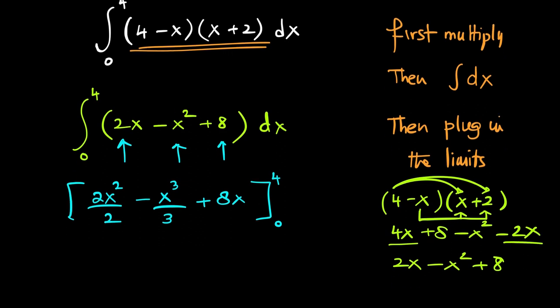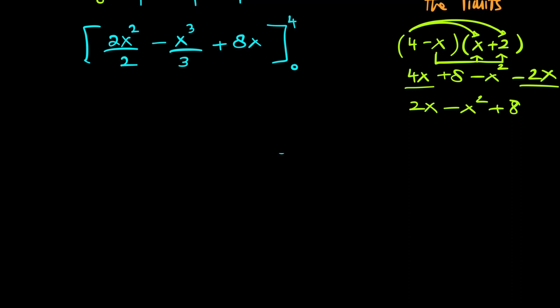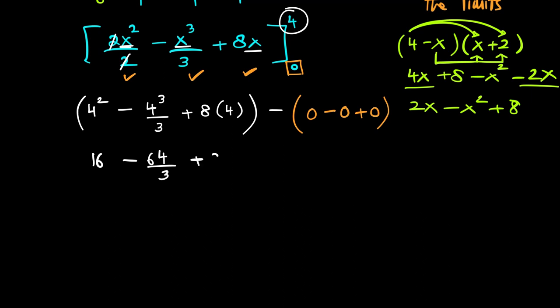Let's first do the simplification also which is simplifying the 2 and the 2 and now 4 will be plugged in wherever there is x. So this is 4 square minus 4 cube divided by 3 plus 8 multiplied by 4. Now let's plug in the lower limit which is 0 which will make all the 3 terms equal to 0. So therefore we are left with 16 minus 64 over 3 plus 32.